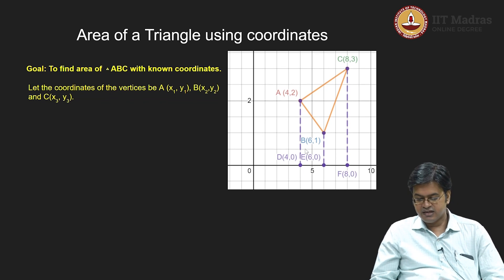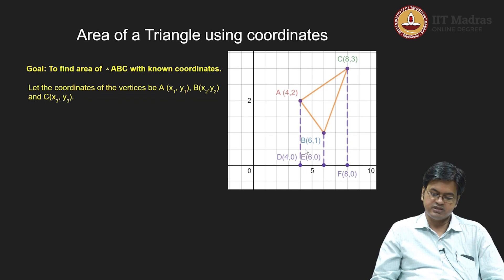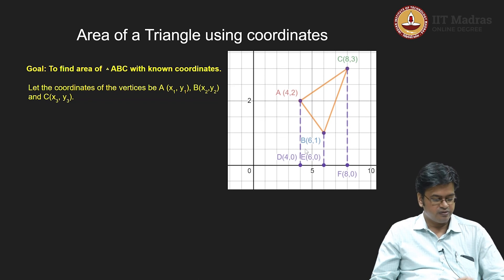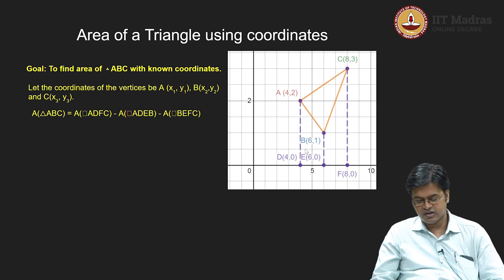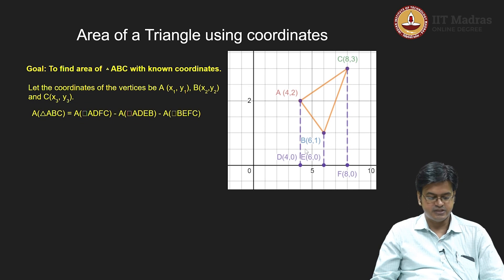Now, my triangle is trapped in between these trapeziums. So let us try to make our understanding crystal clear. If I want to find the area of triangle ABC, then I need to first consider the biggest possible quadrilateral or trapezium that is ADFC and eliminate the areas of two smaller trapeziums that is ADEB and BEFC. And whatever I am left with is the area of triangle ABC.